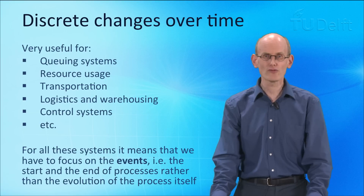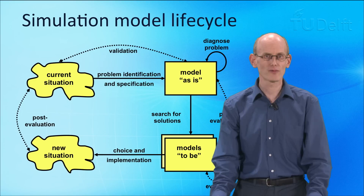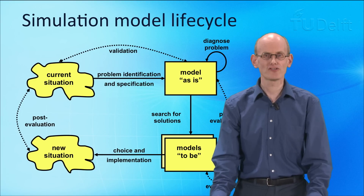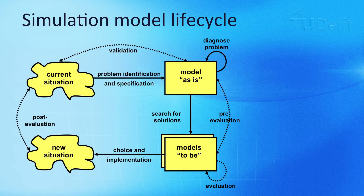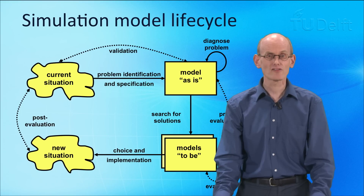For all these systems we only have to focus on events — starts and ends of processes — rather than the evolution of processes themselves. So how do we build these types of simulations? The simulations are very much built based on models for the current situation and models for potential future situations. The models have to be identified based on states and information we can get from the infrastructure system itself.